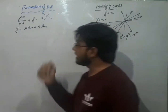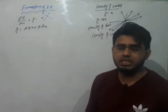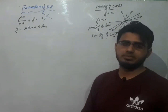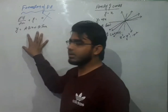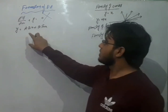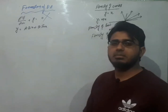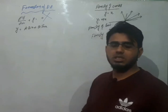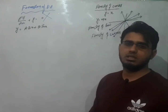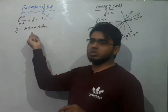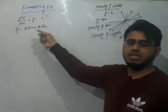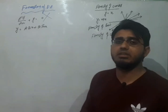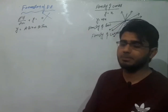अब यहाँ पर solution given है, differential equation नहीं given. तो हमें कैसे पता चलेगा कि यह कितने order की differential equation बनेगी? जब भी कोई solution given हो, हम सबसे पहले देखते हैं कि उसमें arbitrary constants कितने use हैं. यहाँ पर दो arbitrary constants हैं, इससे पता चलता है कि यह second order differential equation बनेगी.